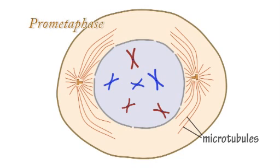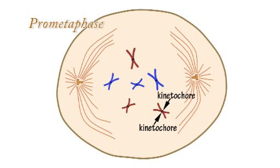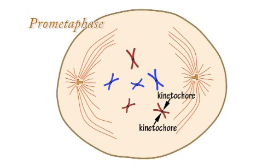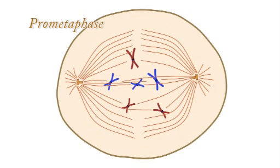In prometaphase, the nuclear envelope dissolves. Proteins attach to sister chromatids at the centromere of each chromosome, forming a pair of kinetochores to which microtubules attach.